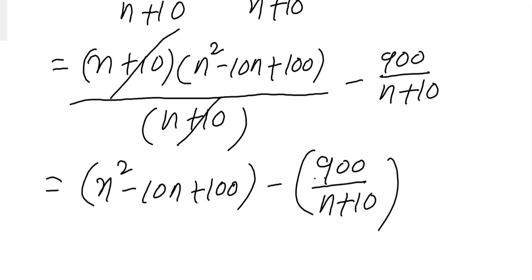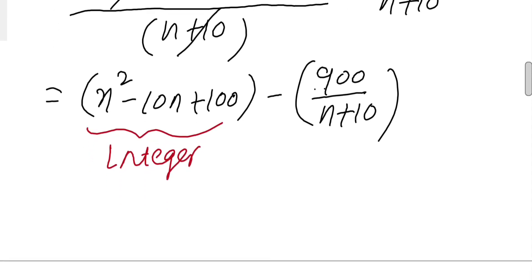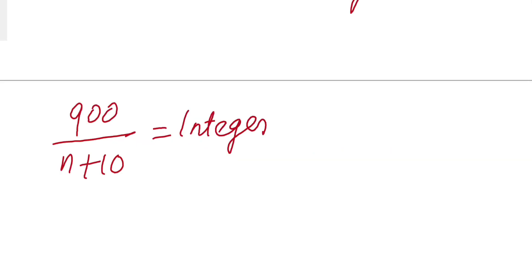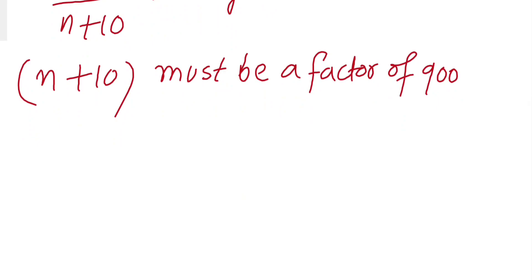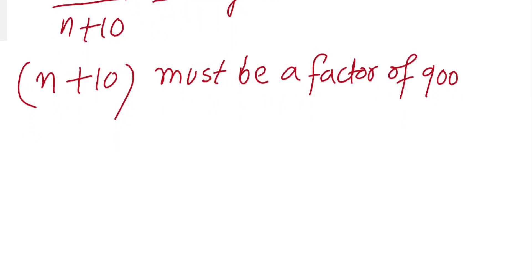We will get this is always an integer, but this portion, in order to be an integer, (n+10) must be a factor of 900.